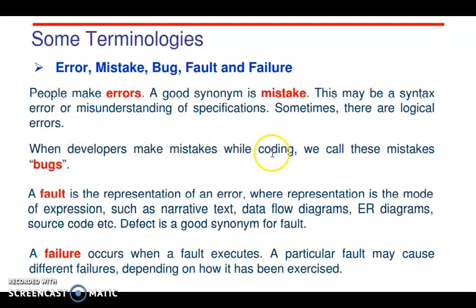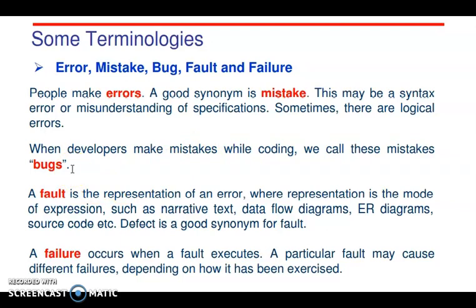When developers make mistakes while coding, we call these mistakes bugs. These can be index errors, syntax errors, or logical errors. Bugs can appear in artifacts such as narrative text, data flow diagrams, ER diagrams, source code, etc.